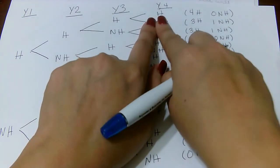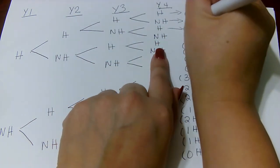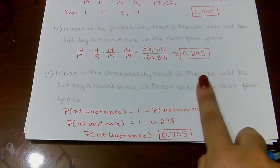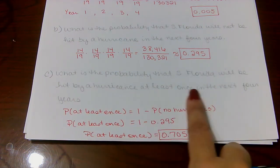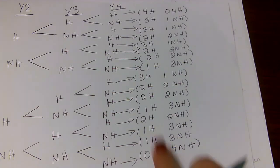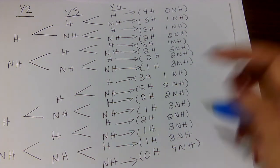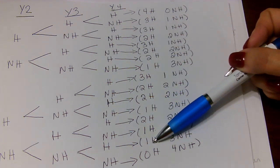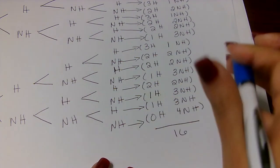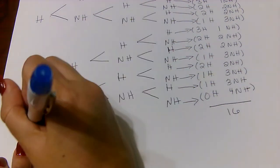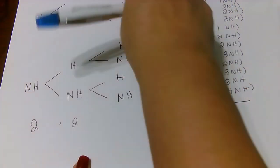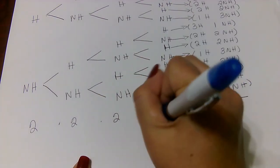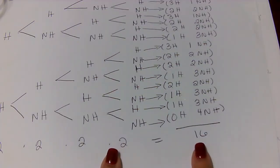With all options laid out, we can count how many ways these events can happen. Since there are two options each year over four years, there are 2^4 = 16 total outcomes. Now let's count how many of those have at least one hurricane. All paths have at least one hurricane except the single path with zero hurricanes. So there is only one way that no hurricanes occur out of the 16 possibilities.